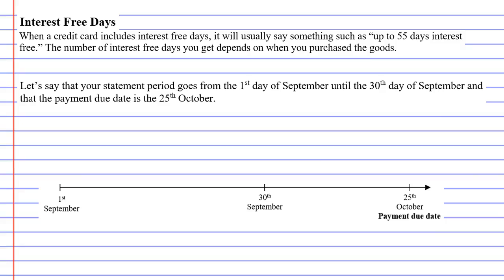In this video we're going to explain how interest-free days work. When you have a credit card with interest-free days it will usually say something such as 'up to 55 days interest-free.' Notice that it has the phrase 'up to' on it, meaning it could be less than 55 days.